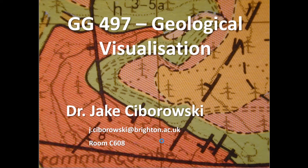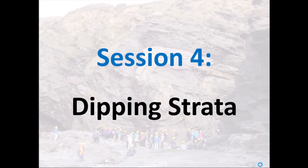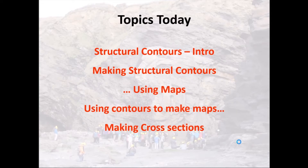Welcome to session number four of GG 497 Geological Visualization. Today we're going to be looking at dipping strata. We looked at horizontal rocks and vertical rocks last week, and this week we're going to look at ones which have some sort of angle of dip, some inclination. Today we'll cover structural contours, show how they can be made using maps, and then use them to make cross sections for dipping rocks.